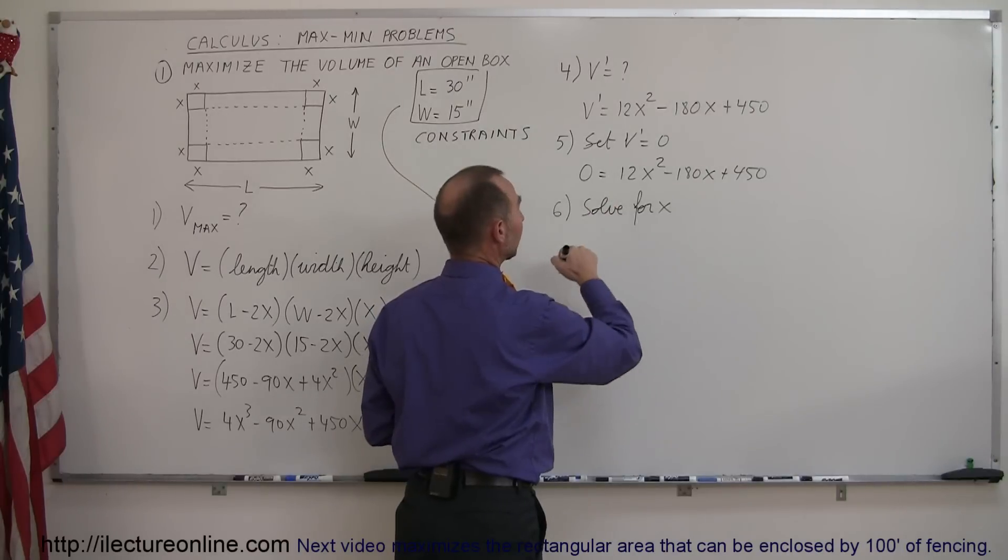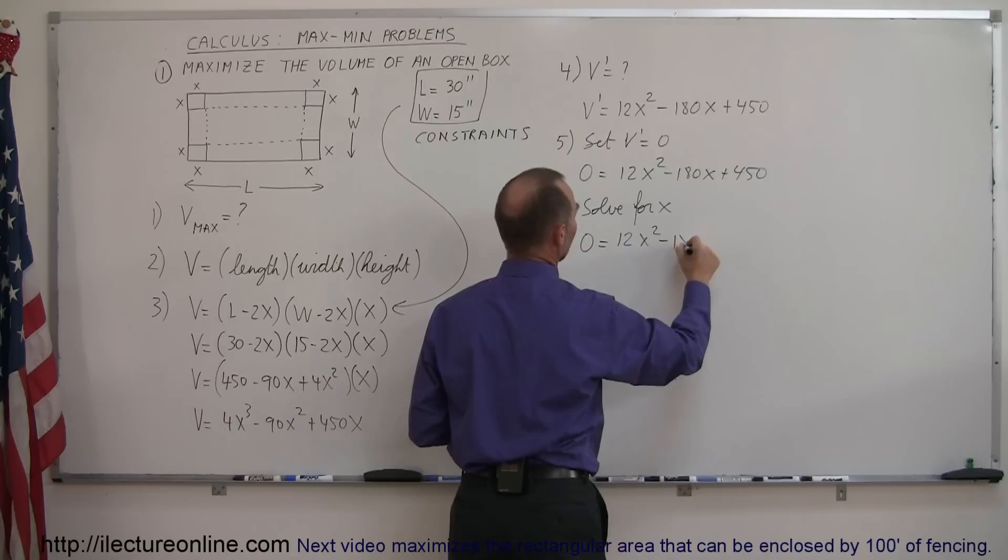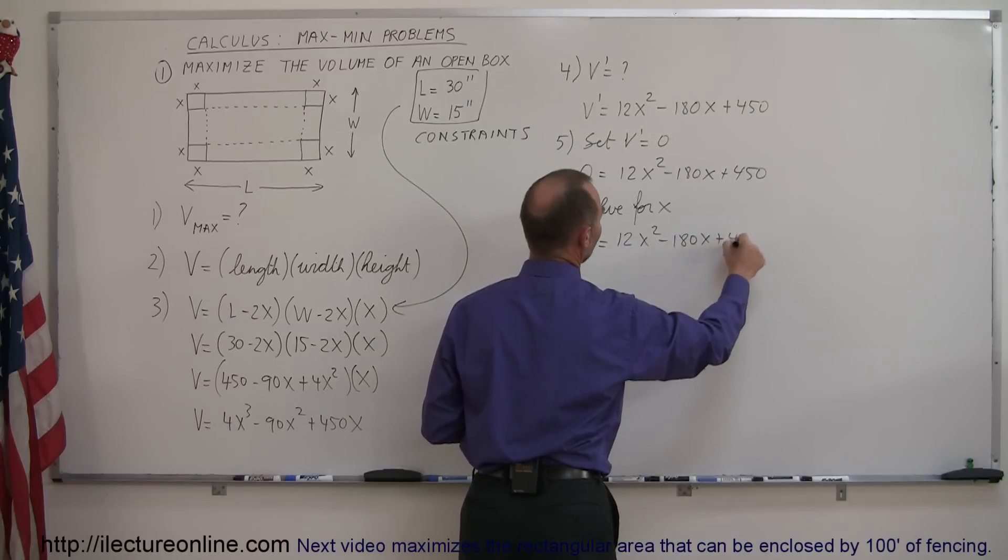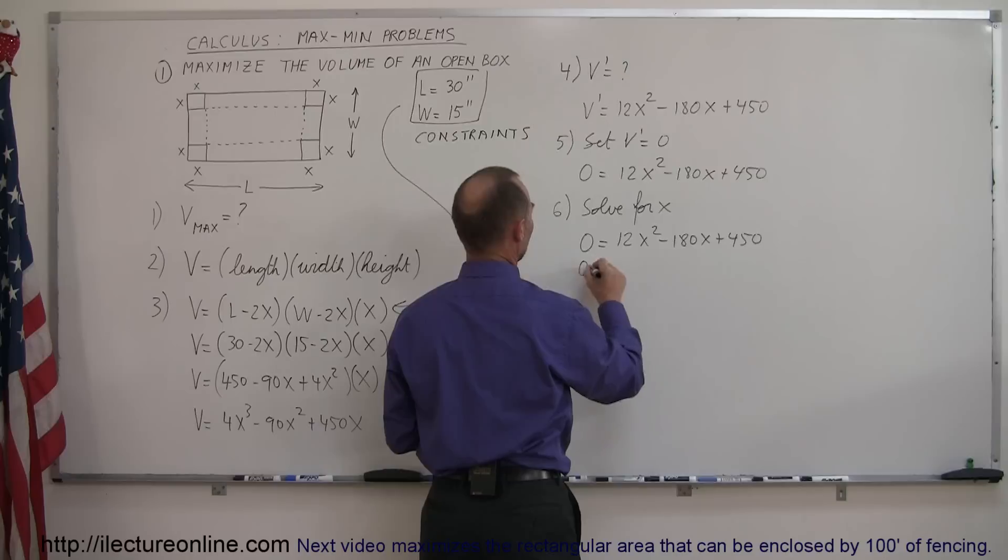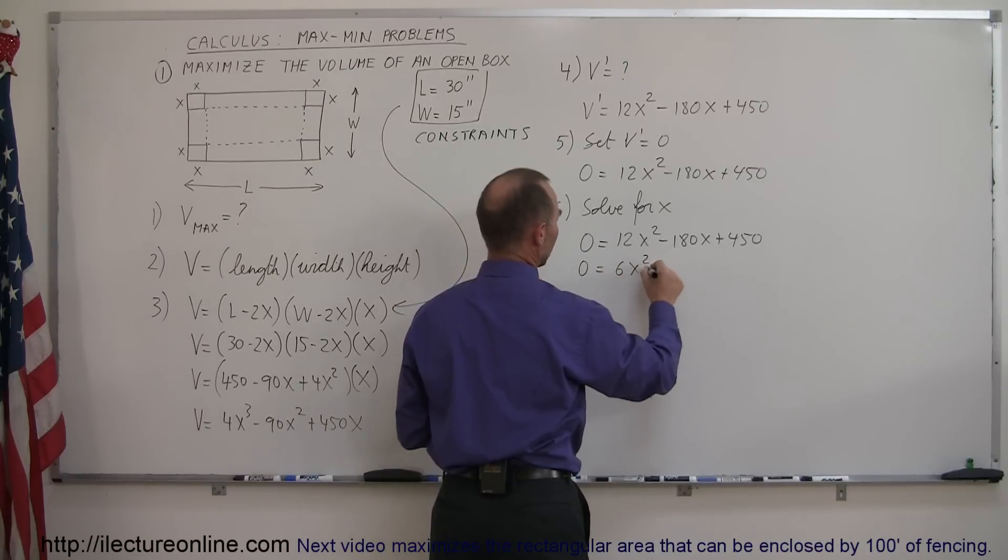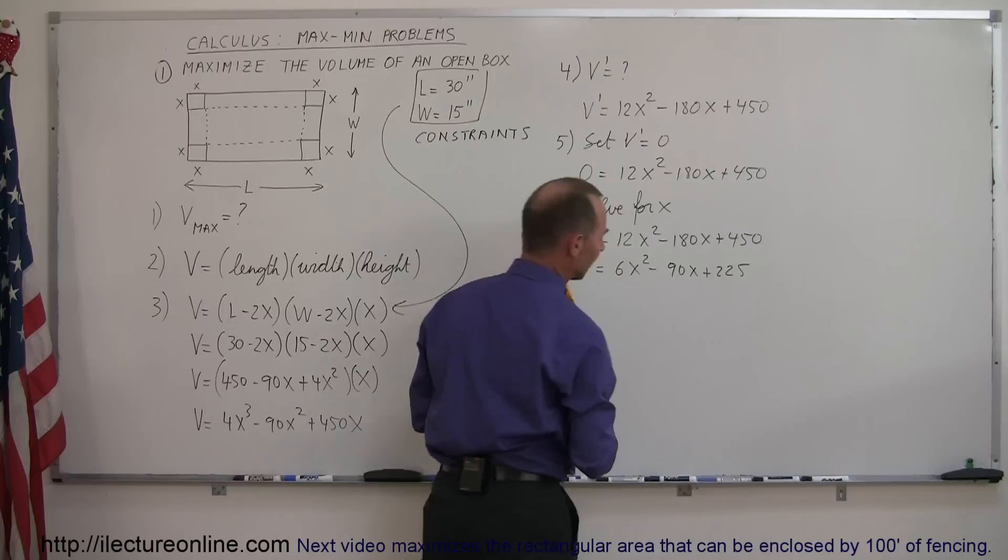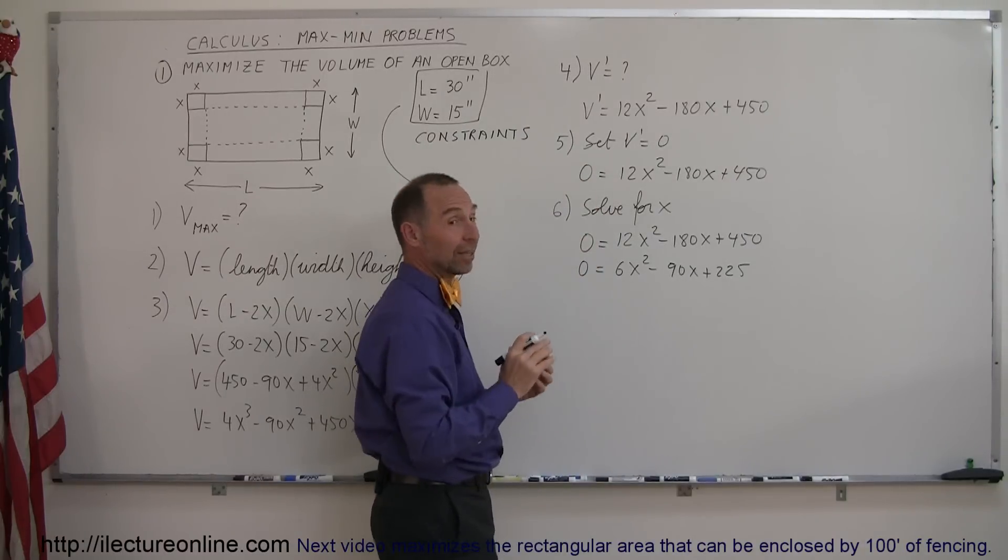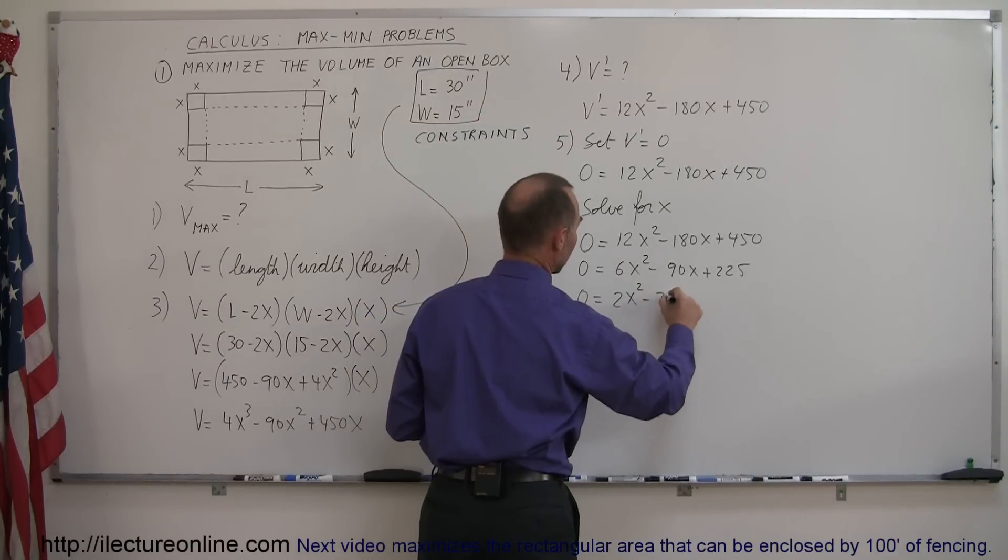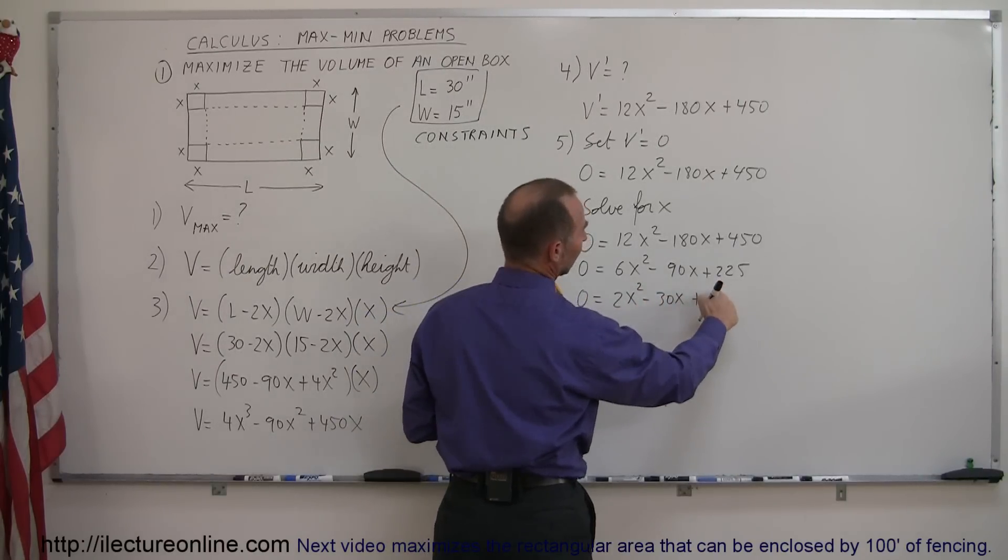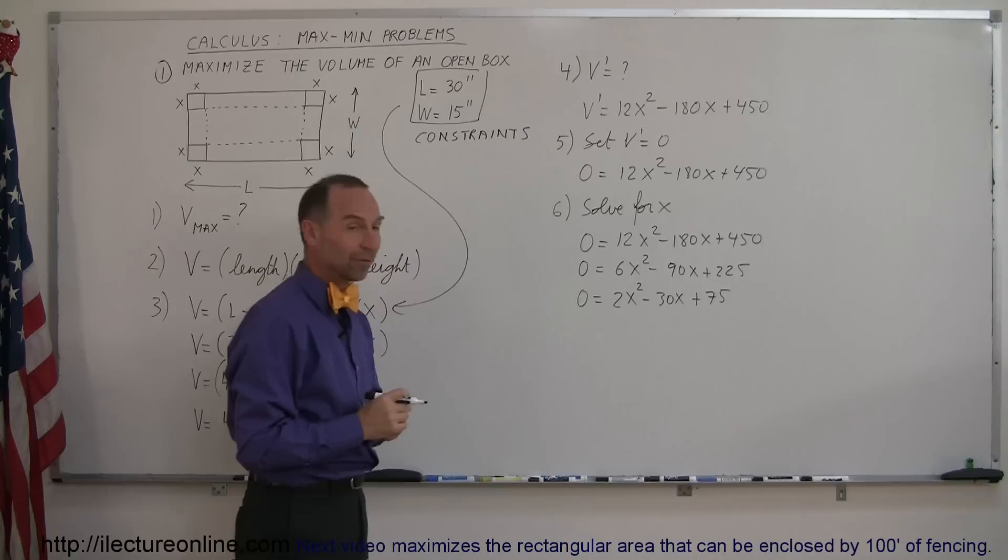Solving this for x, we have 0 is equal to 12x squared minus 180x plus 450. We can divide everything by 2, so 0 is equal to 6x squared minus 90x plus 225. Looks like we can divide everything by 3, so 0 is equal to 2x squared minus 30x plus 75. I think that's as far as I can simplify that.